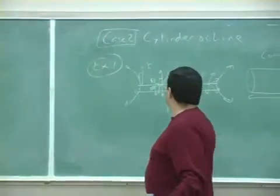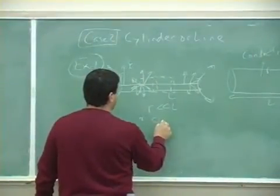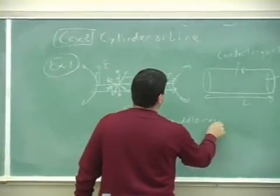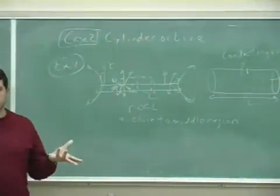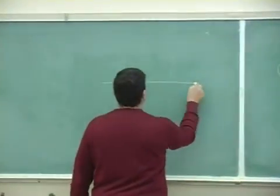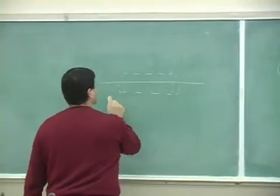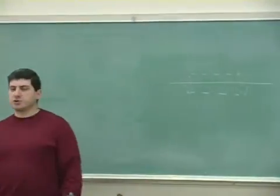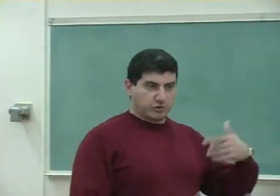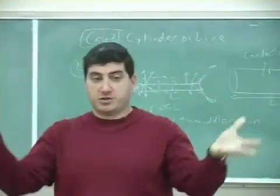So R much less than L, and close to the middle region — those are your two conditions. So here's what we do: we draw a line and we draw a Gaussian surface. Now why did I choose a cylindrical Gaussian surface to apply Gauss's law, versus a spherical Gaussian surface?